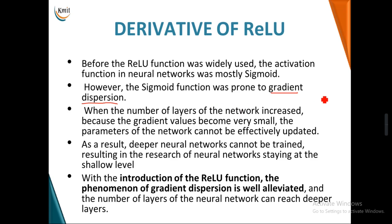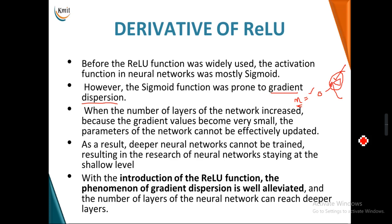In gradient descent, the updated parameters equal old parameters minus learning rate times the gradient. If the gradient becomes very small, there is essentially no update to the model parameters. As a result, deep neural networks cannot be trained effectively and behave like shallow networks even when more layers are added. When ReLU was introduced, this gradient dispersion problem was resolved, enabling truly deep neural networks.